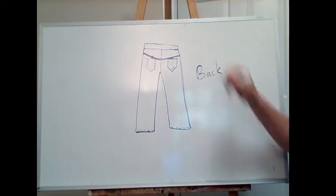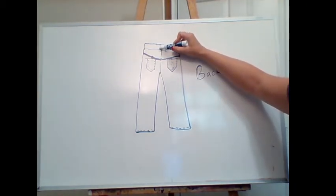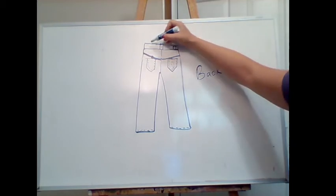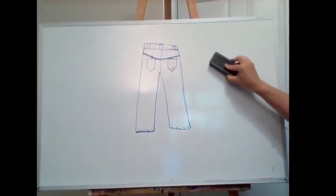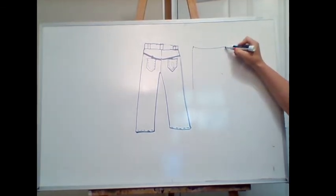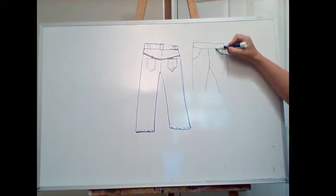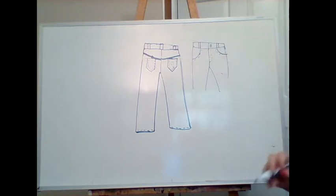Let's put some belt loops on. Belt loops can go anywhere, but they have a standard place. There are typically three on the back — one right in the center back and two more placed just in from the side seam. On the front, the belt loops tend to align with where the front pockets meet the waist. Again, you can put them anywhere — this is just the standard construction.